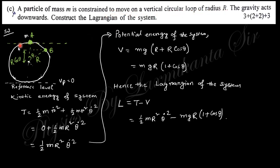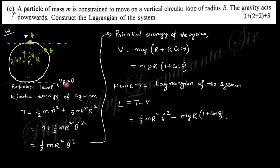The next question: a particle of mass m is constrained to move on a vertical circular loop of radius R, with gravity acting downward. Find the Lagrangian of the system. Taking the initial point and sliding from A to B, the kinetic energy is ½m(ṙ² + r²θ̇²). Since r is constant, ṙ = 0, so the kinetic energy is ½mR²θ̇². For potential energy, taking the bottom of the loop as reference, the height is R + R cosθ, so V = mg(R + R cosθ).